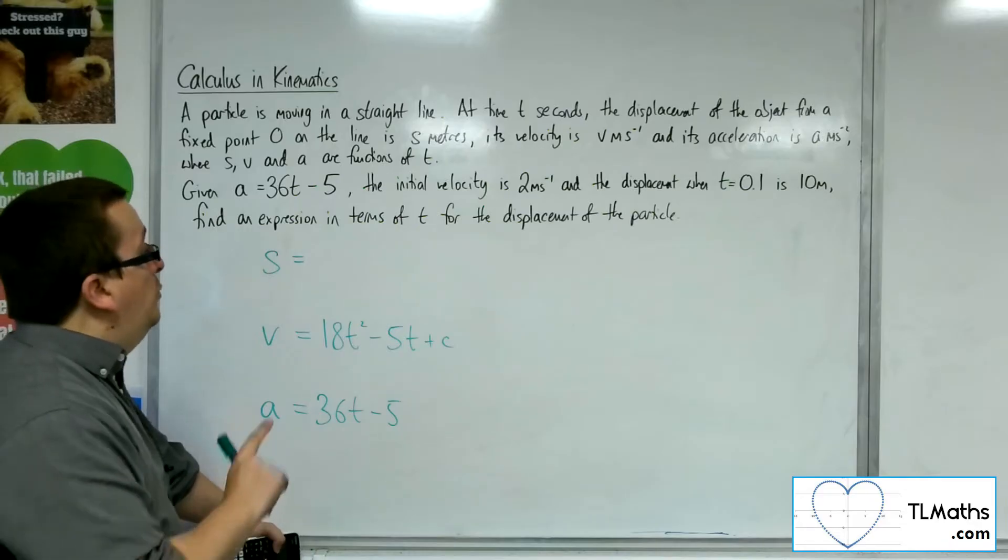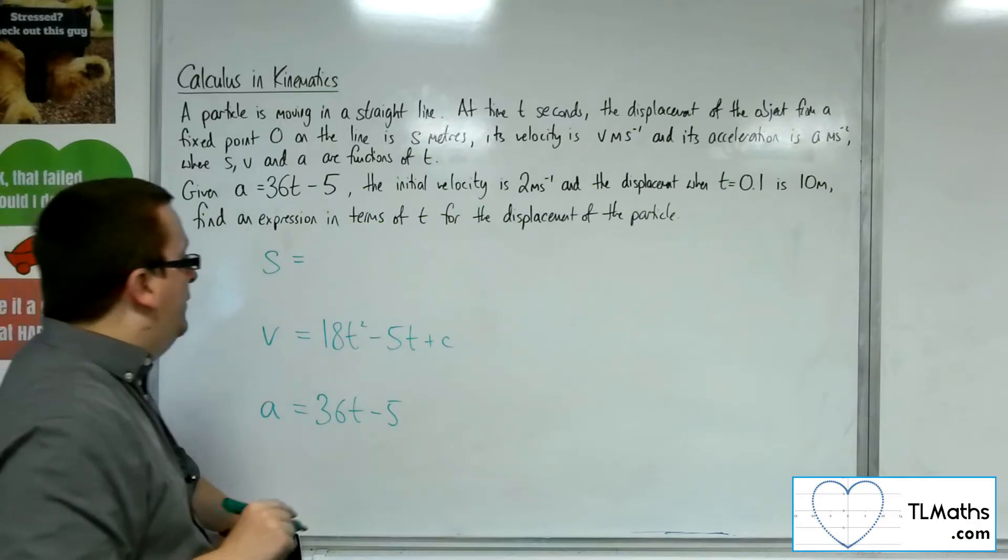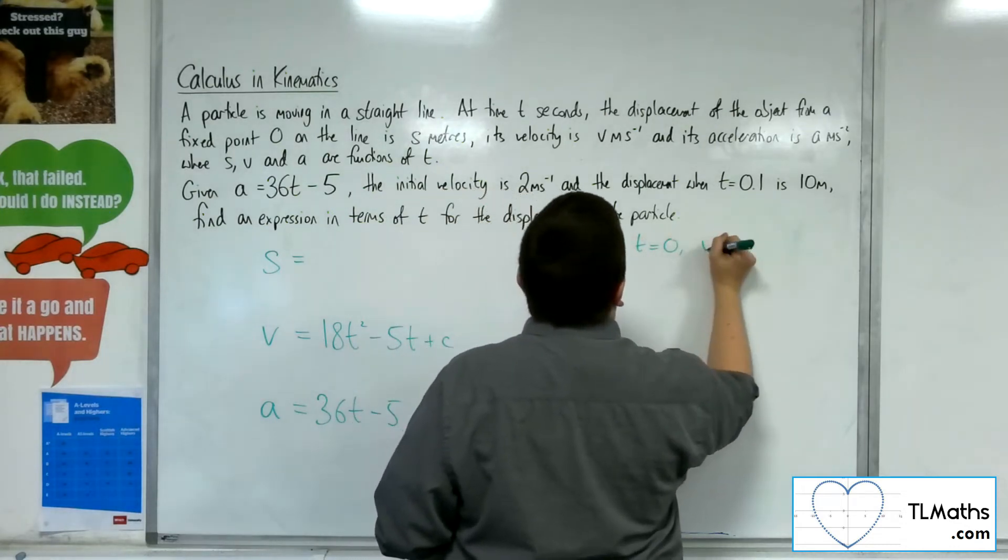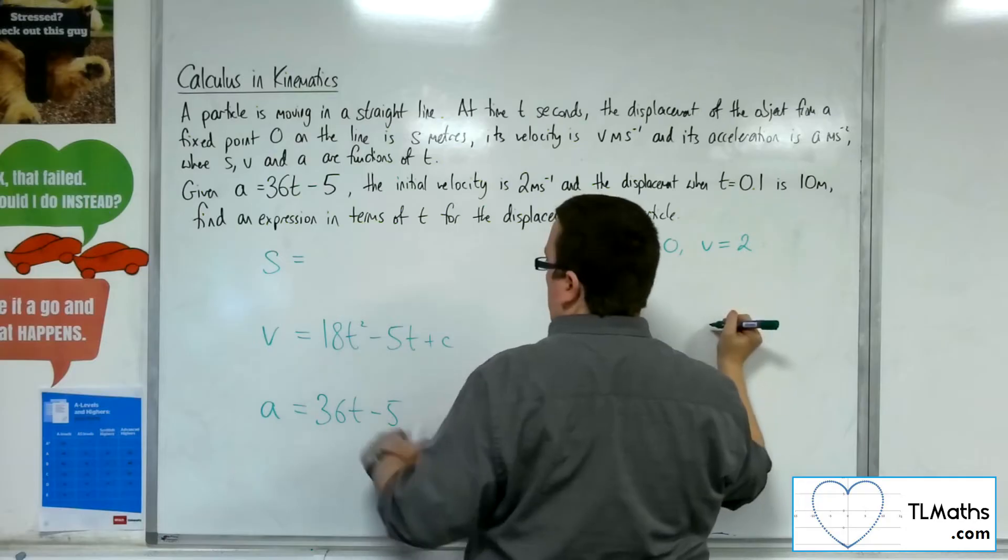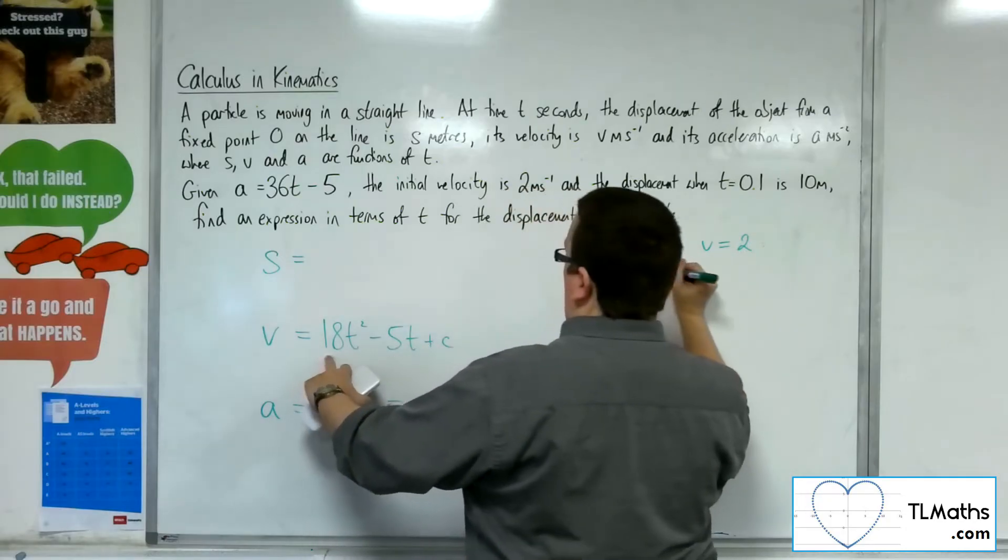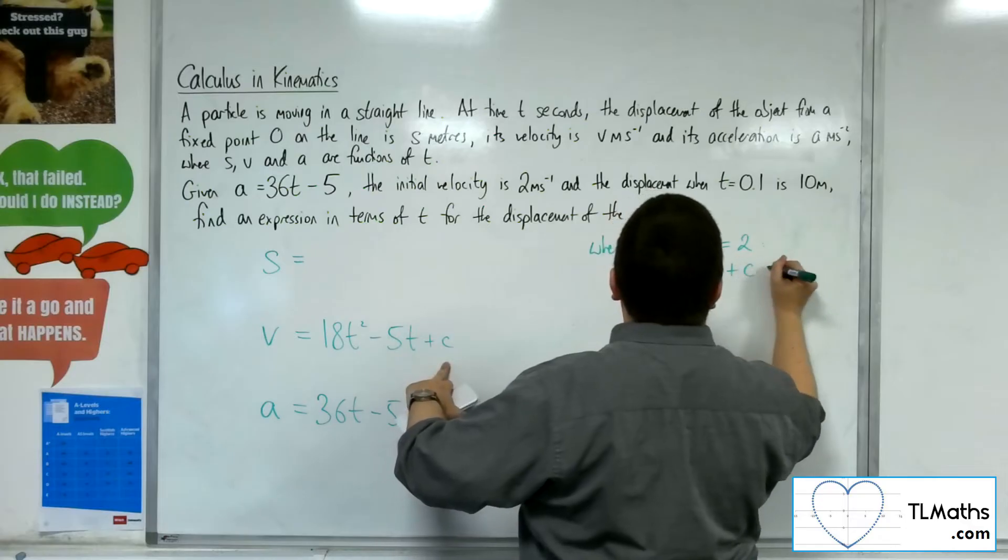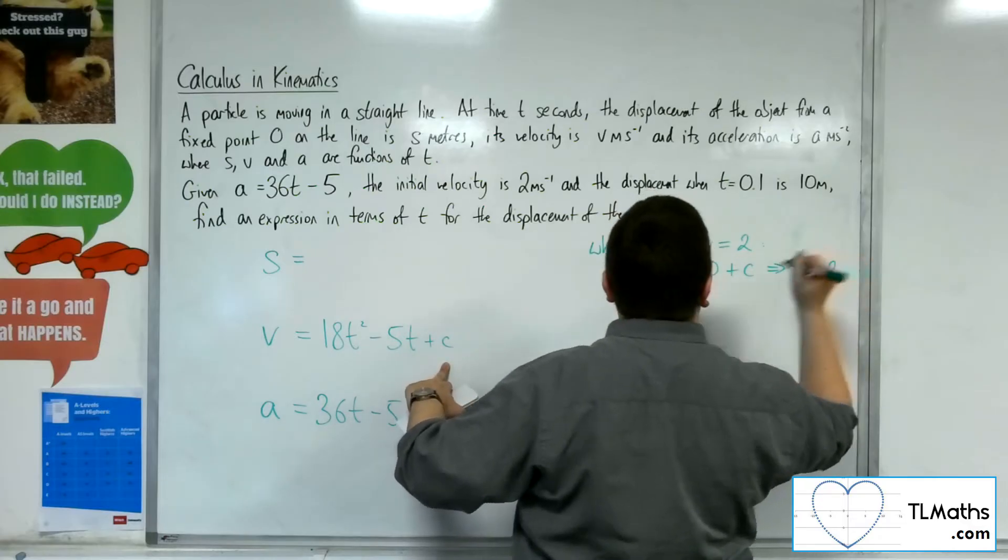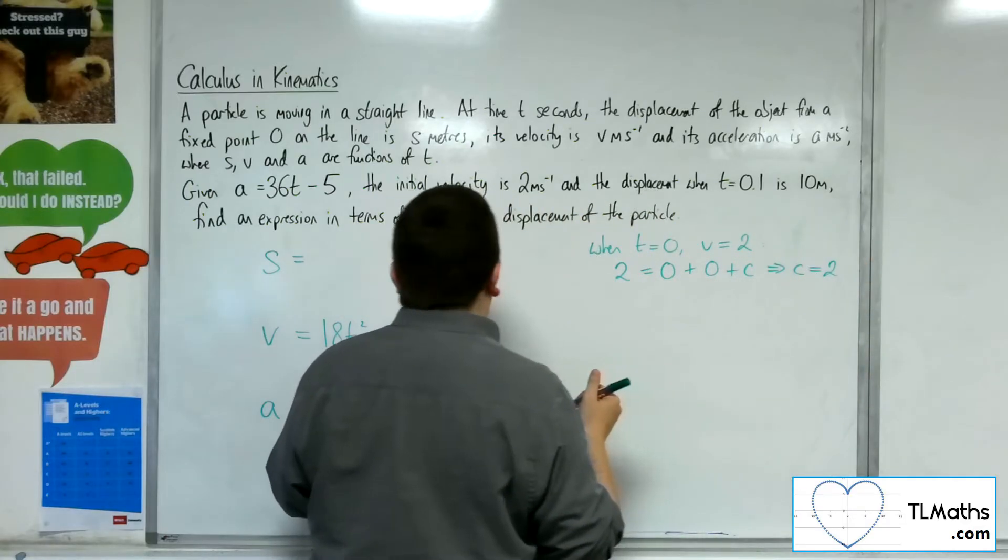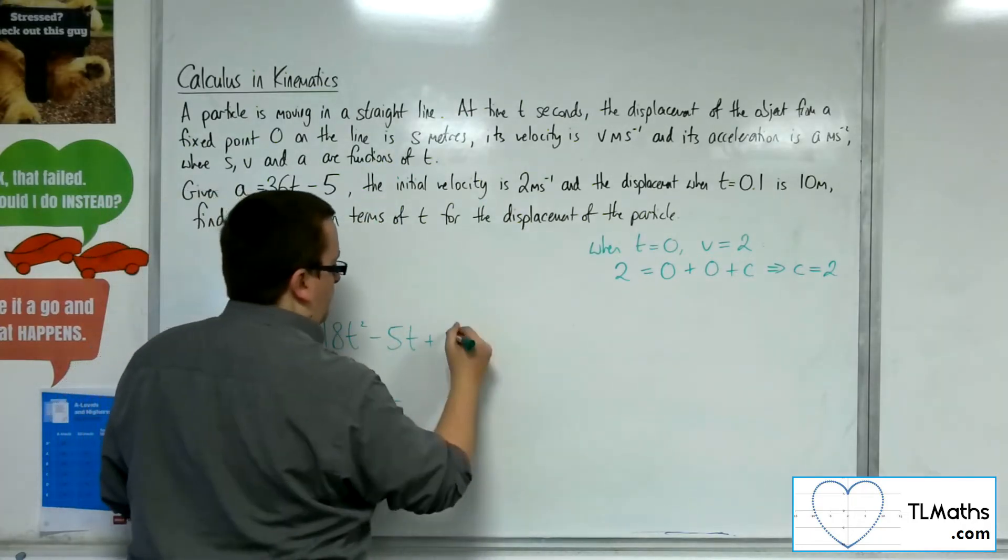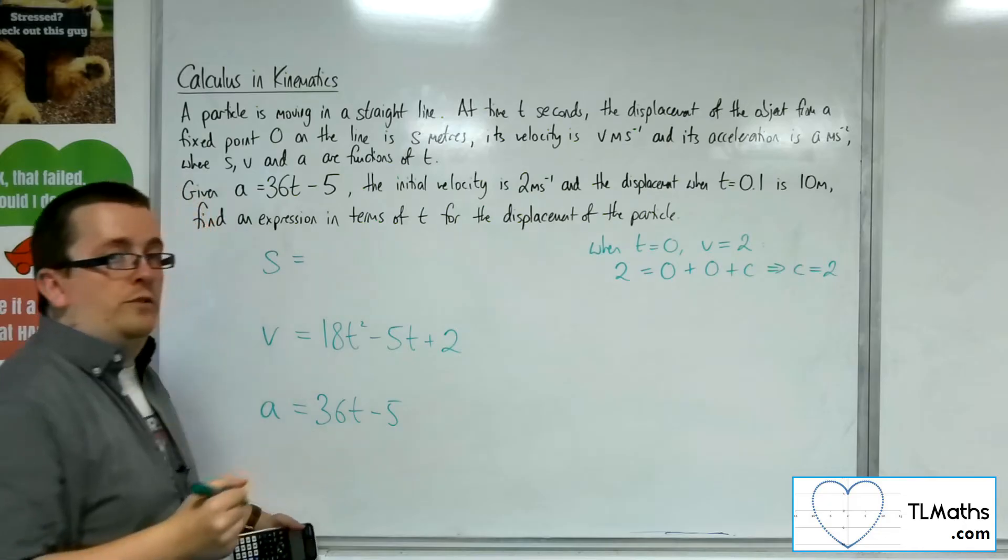Now I'm told that the initial velocity is 2 metres per second. So when t is 0, v is 2. So we've got 2 is equal to 0 plus 0 plus c. So c must be 2. So we now have c is 2. So this is my equation for the velocity.